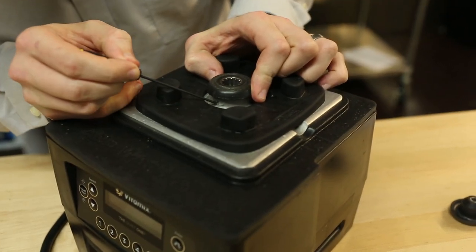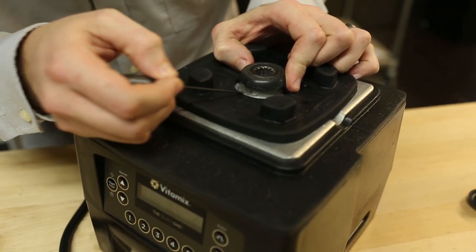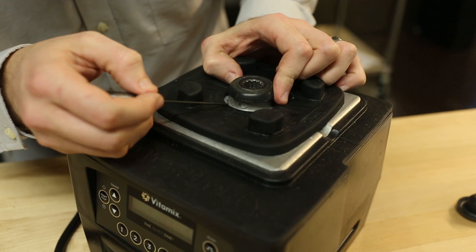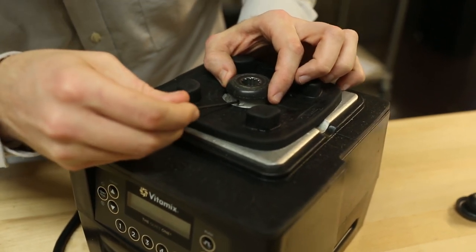You want to line that up with the hole, which has some silicone covering it, which you can either just jab right through or pull out. You'll want to replace that once you're done replacing the socket.